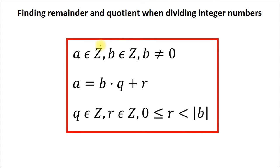To solve this problem we should use the Quotient Remainder Theorem. It says that given any integer number a and b there exists unique integers q and r such that a is equal to b multiplied by q plus r, where r is more or equal to zero but less than the absolute value of b.